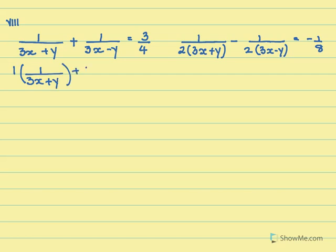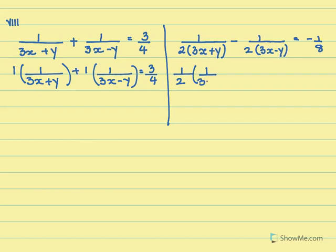Here again the coefficient is 1. The variable is 1 over 3x minus y, equals 3 by 4. For the next term, the coefficient is 1 by 2 and the variable is 3x minus y, equal to minus 1 by 8.